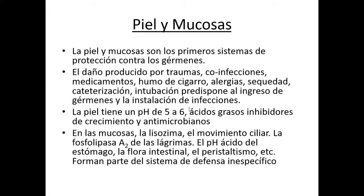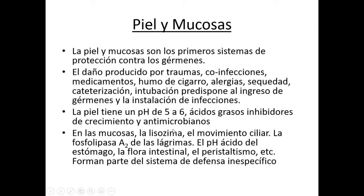En gérmenes extracelulares, siempre en la inmunidad innata, lo primero es el sistema de barreras. En la medida que las barreras estén en buen estado y no haya soluciones de continuidad, los gérmenes no van a poder entrar. Lo primero es mantener este sistema en buen estado. La piel, las mucosas, los epitelios en general, también producen una serie de productos que se encargan de impedir que el organismo vaya a ser colonizado por gérmenes.